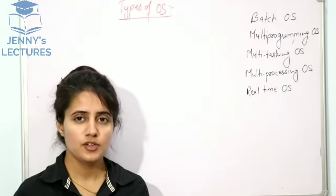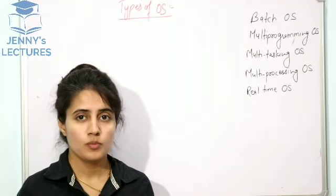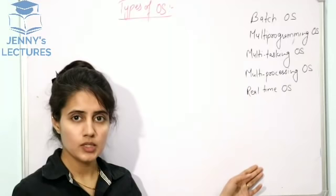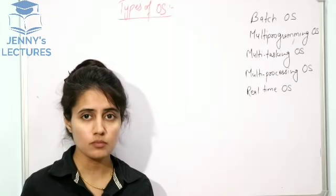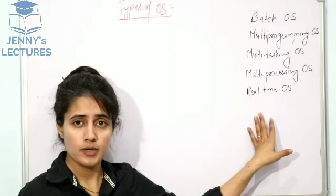In this video I am going to discuss types of operating system. I'll discuss five types. Other than these, there are also network operating system, distributed operating system, mobile operating system, single user, and multi-user operating system. In this video I'm going to discuss only these five types — network and distributed operating system I'll discuss in the next video.